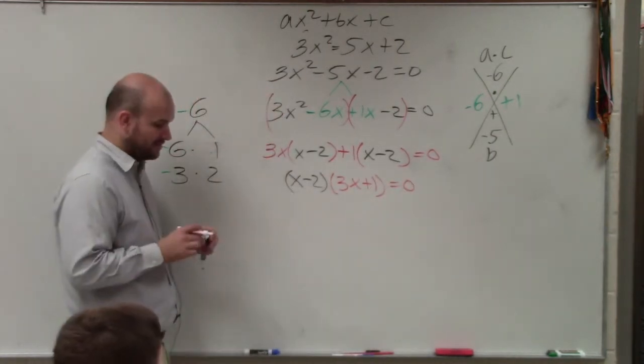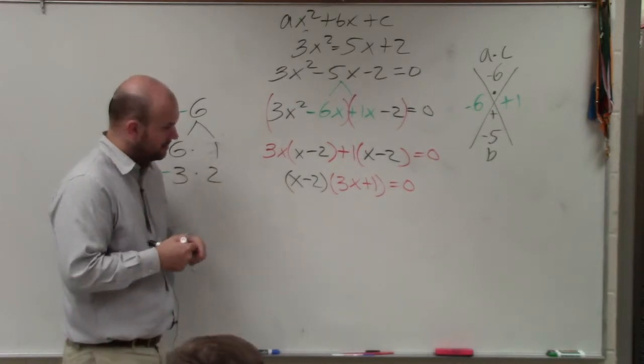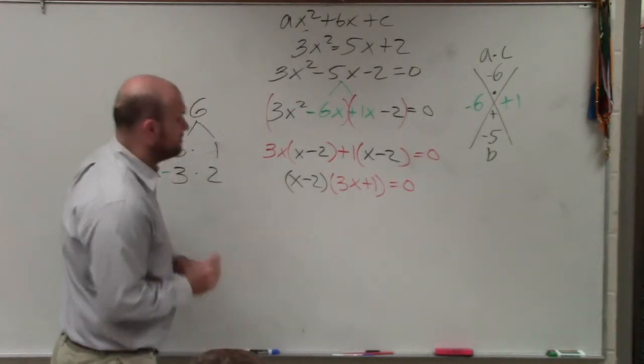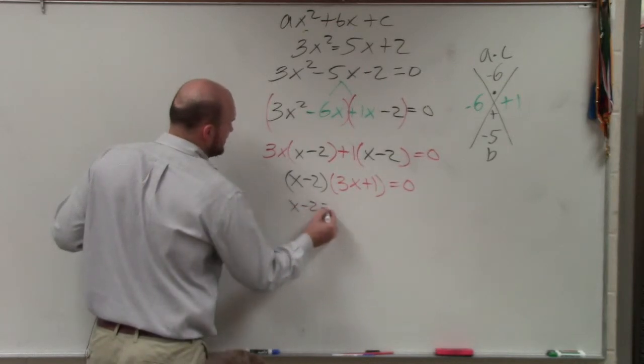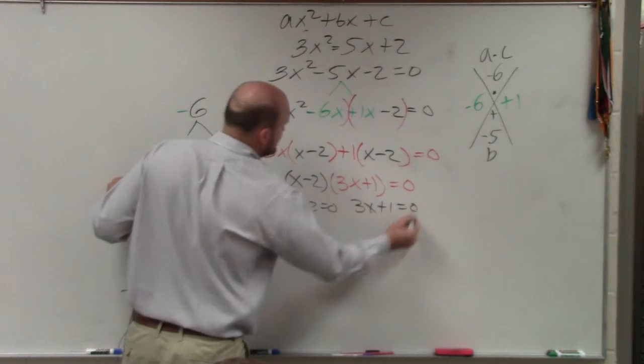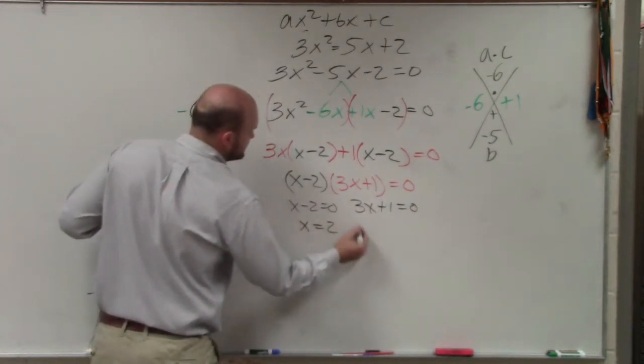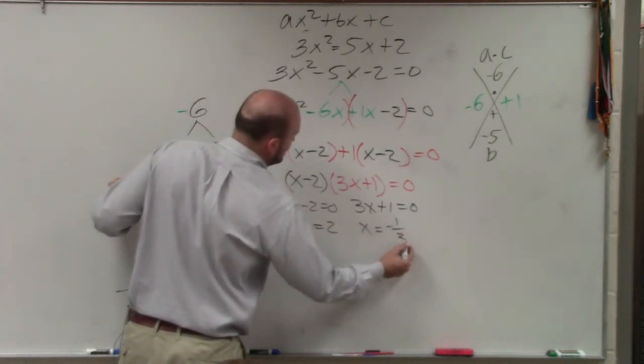Now, I can apply the zero product property, which I'm not going to do that. I'm just going to show that, well, I'll do x minus 2 equals 0, and 3x plus 1 equals 0, x equals 2, x equals negative 1 third.